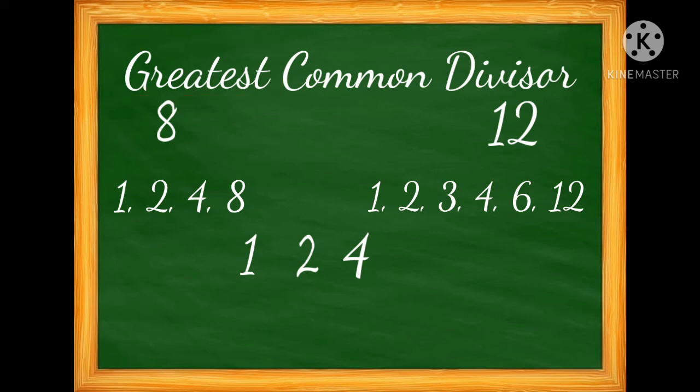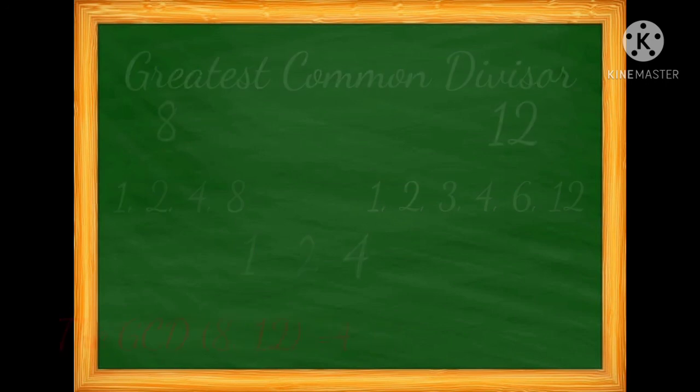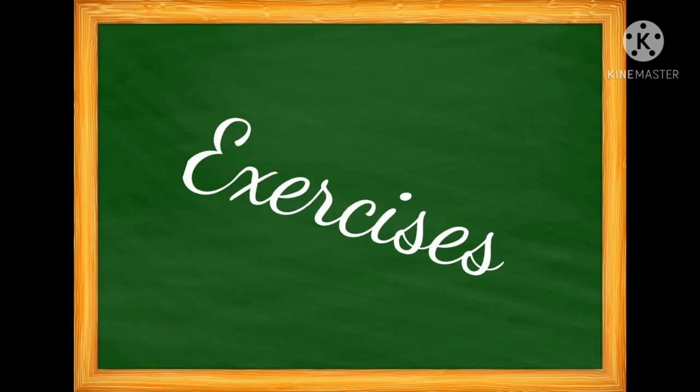So we look for the greatest common divisor among all common factors. 4 is the greatest or highest among these three numbers. That's why the GCD of 8 and 12 is 4. I have here some exercises in order to test if you fully understand the topic.